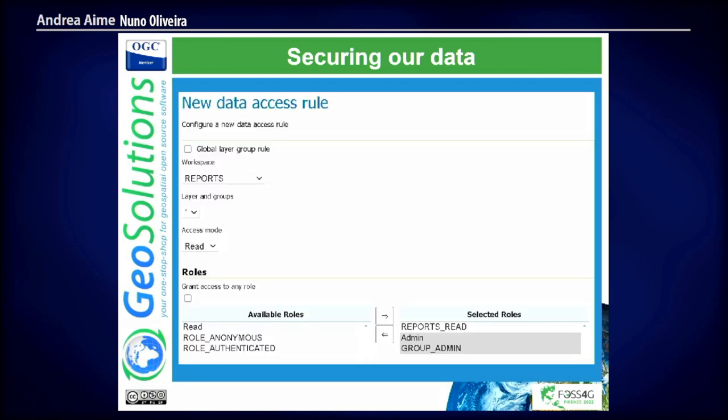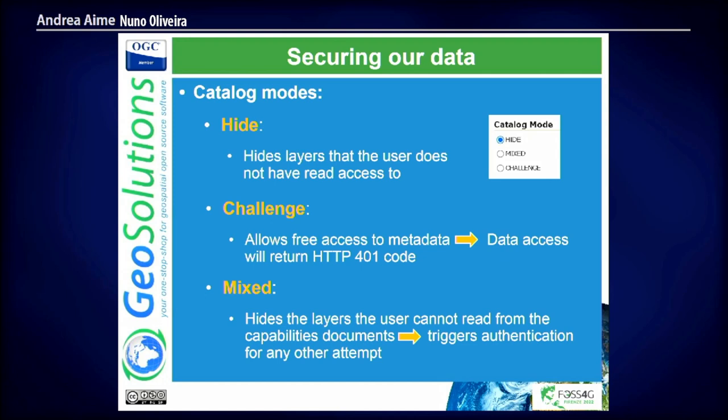We have the catalog mode — another interesting one. When we publish data through GeoServer, one part is the publishing of the metadata. In the capabilities documents, if we connect a QGIS or an OGC-compliant web portal, we're able to see the layers and styles available. The catalog mode controls that. Hide means that a user without access won't see anything in the capabilities documents. Challenge means they'll see those layers, but when they try to access them, they'll be requested for authentication. Mixed is a combination of both.